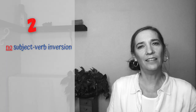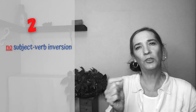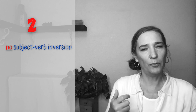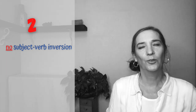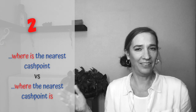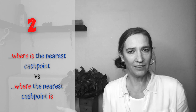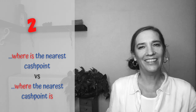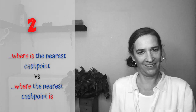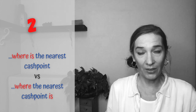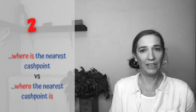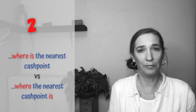Rule number two is that there's no subject-verb inversion the way there is in direct questions. Where is the nearest cash point? versus where the nearest cash point is. This is statement word order — the same word order we use to create an affirmative sentence: the nearest cash point is over there.